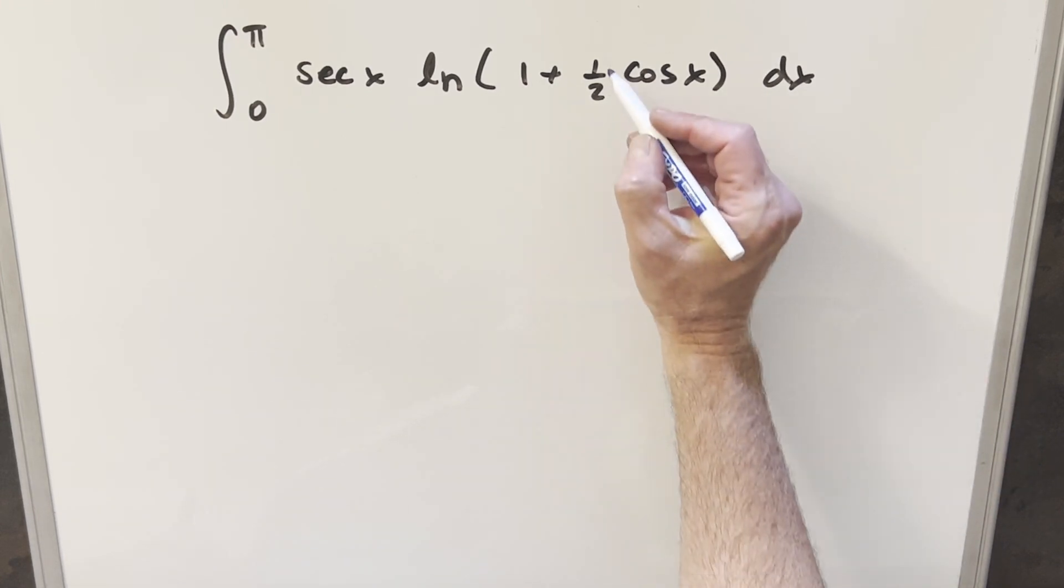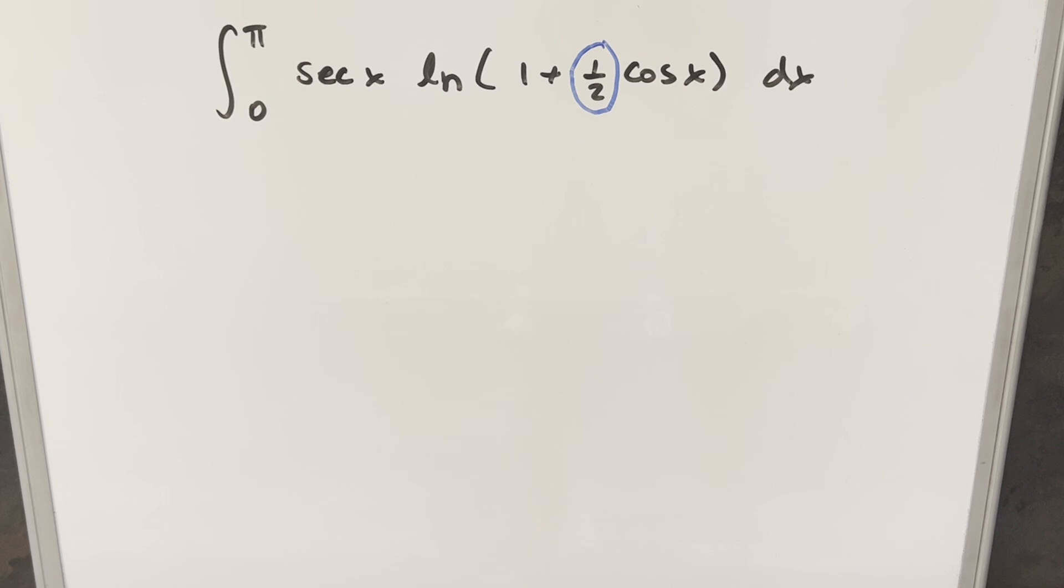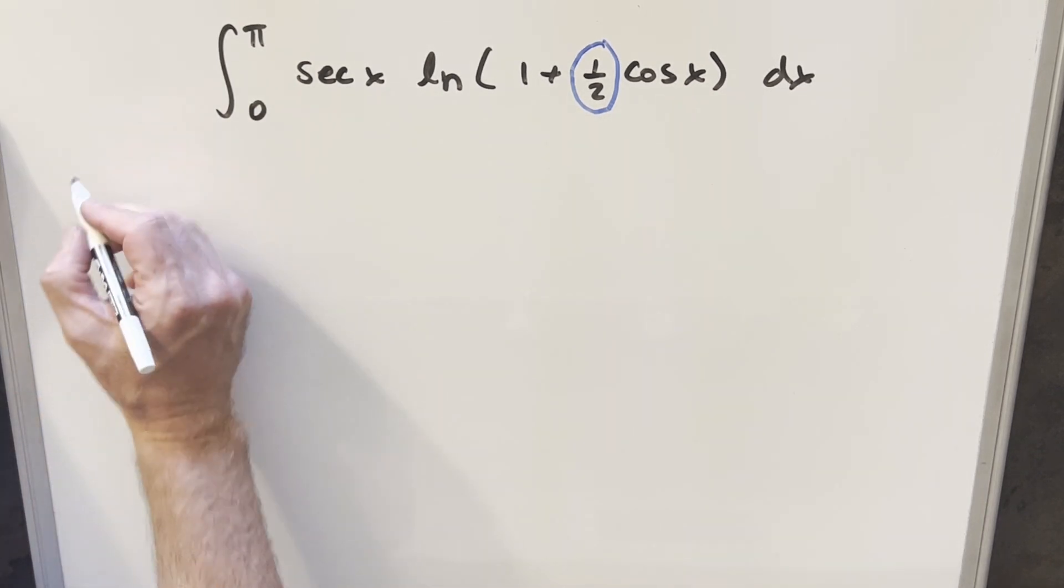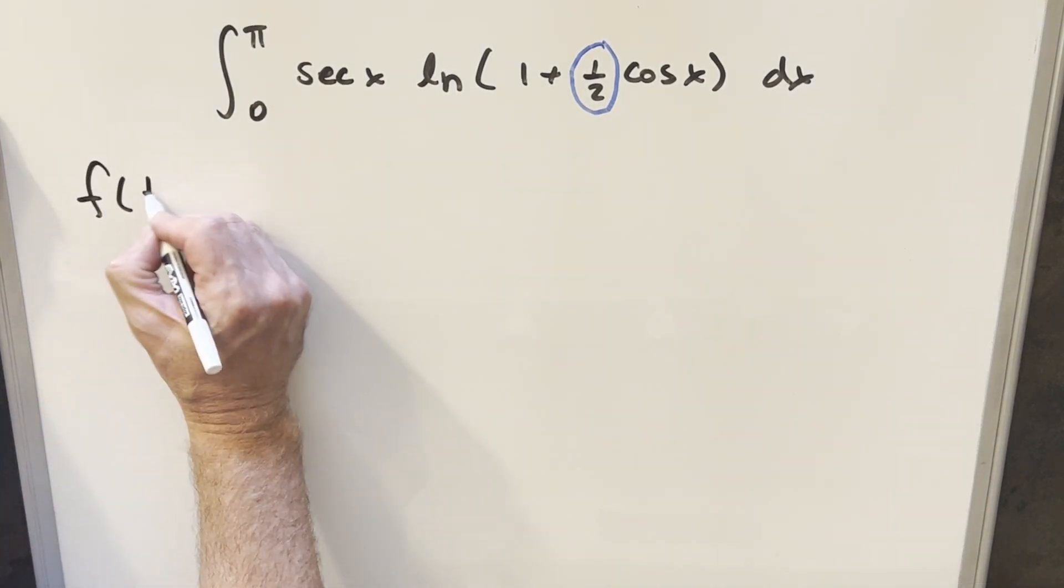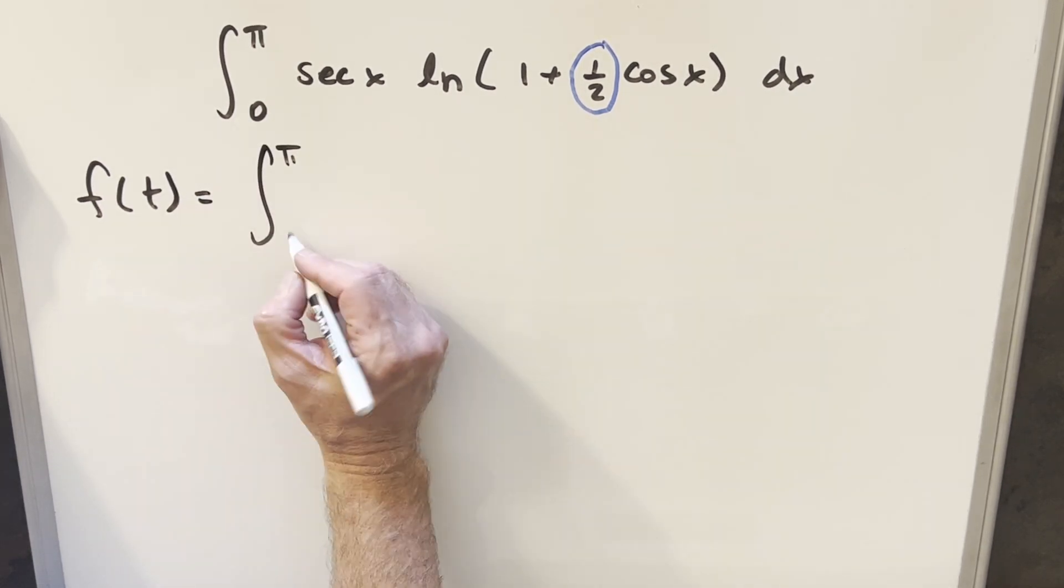And what I'm thinking here is with this one half in front, let's just use Feynman's trick with our input being this one half here. So how I'm going to do this, we'll set it up. I'll write it as f of t and we'll rearrange this whole thing with this being our t.